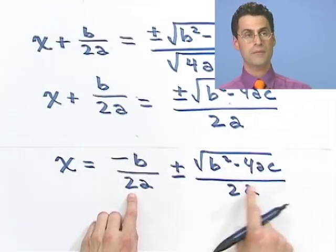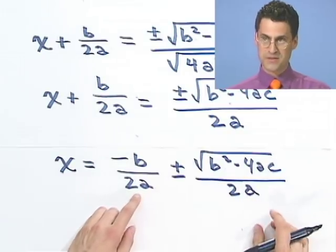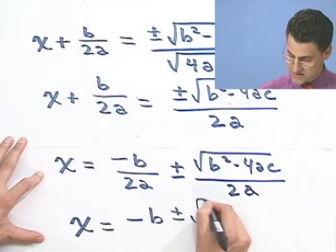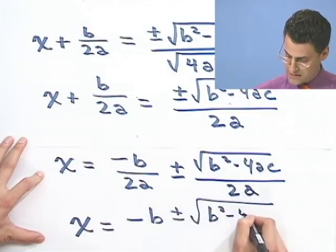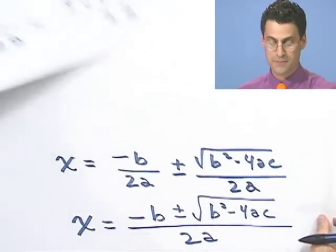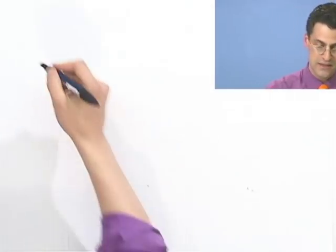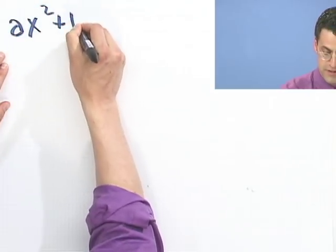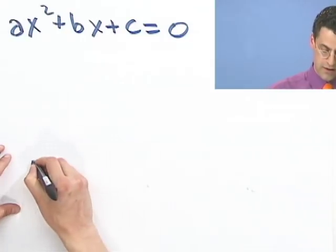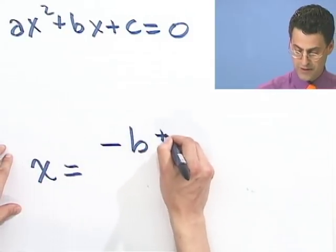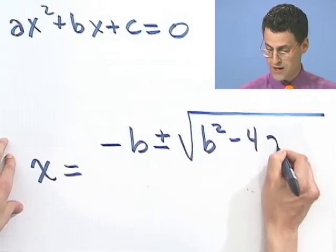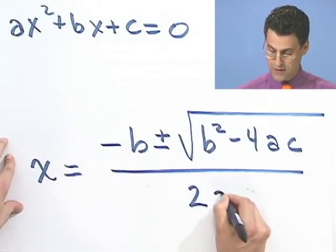So negative b all over 2a plus or minus square root b squared minus 4ac all over 2a. But look, a 2a on the bottom is a common thing. I can just now combine the tops. So if I combine the tops, what do I see? I see x equals negative b plus or minus the square root of b squared minus 4ac. That's the top. And on the bottom, I see 2a. And so what's the big finish? The big finish is that when I see something like ax squared plus bx plus c equals 0, if we complete the square, we see that x equals negative b plus or minus the square root of b squared minus 4ac all divided by 2a.